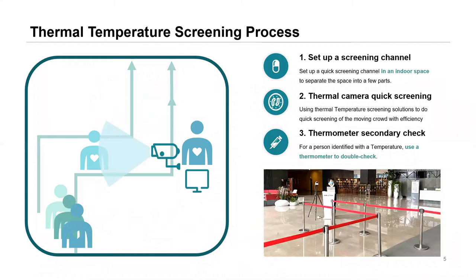Once the camera is set up, we suggest setting up a screening channel. A screening channel is not necessary if the space is narrow, such as a corridor, but for larger areas where a vast number of people could approach the camera at any one time, we suggest policing the situation. Even though these cameras can read up to 30 people's temperatures at once, we recommend reading one person at a time.